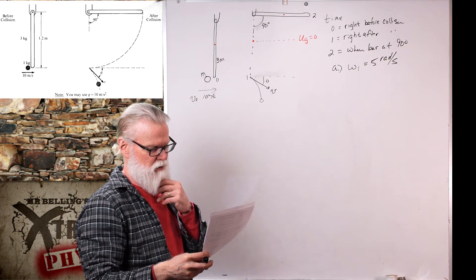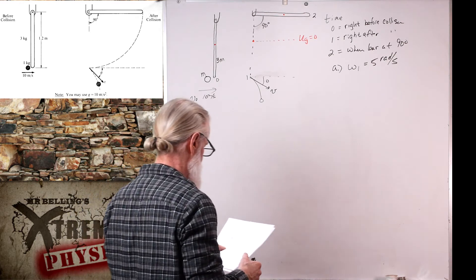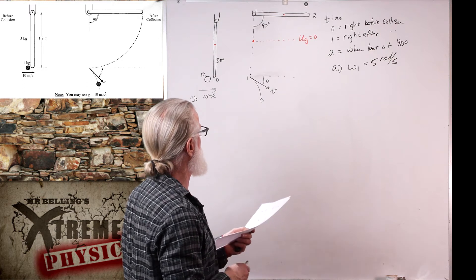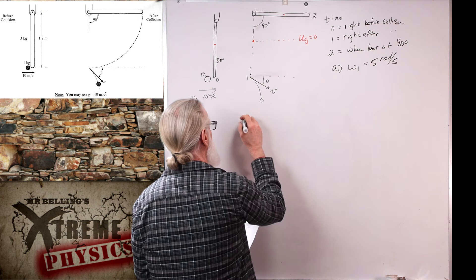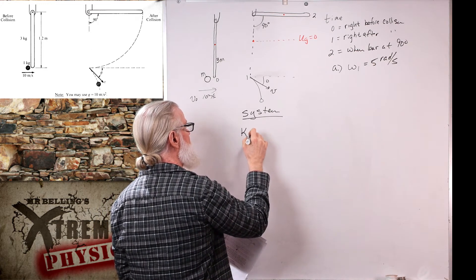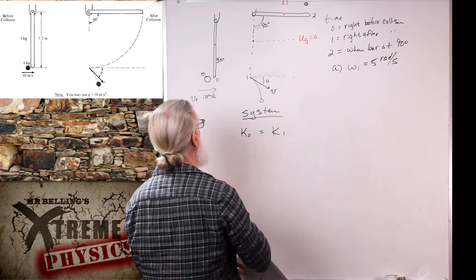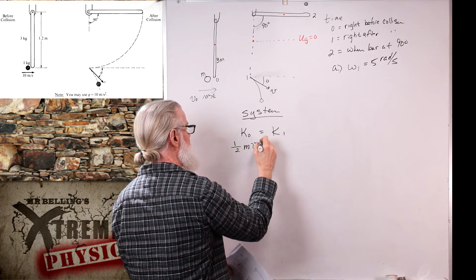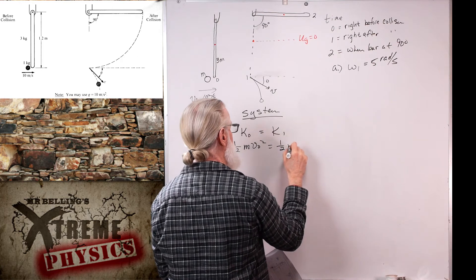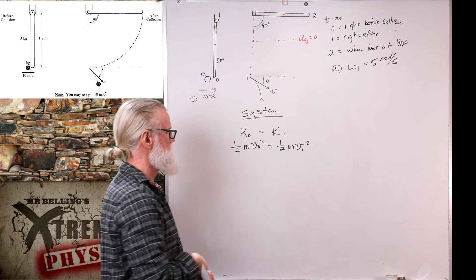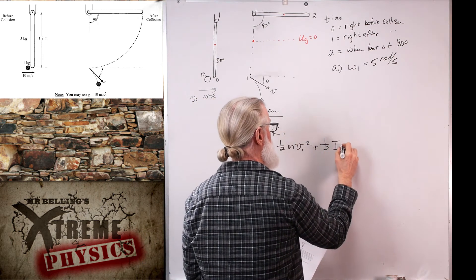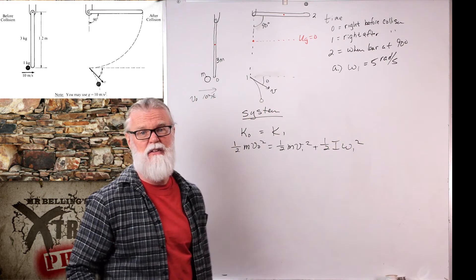Next, determine the speed V of the 1 kilogram object immediately after the collision. The problem states kinetic energy is conserved, so this is an elastic collision. The kinetic energy of the system at t₀ equals the kinetic energy of the system at t₁: one-half m·V₀² = one-half m·V₁² + one-half I·ω₁². We just found ω₁, so we can use that conveniently.